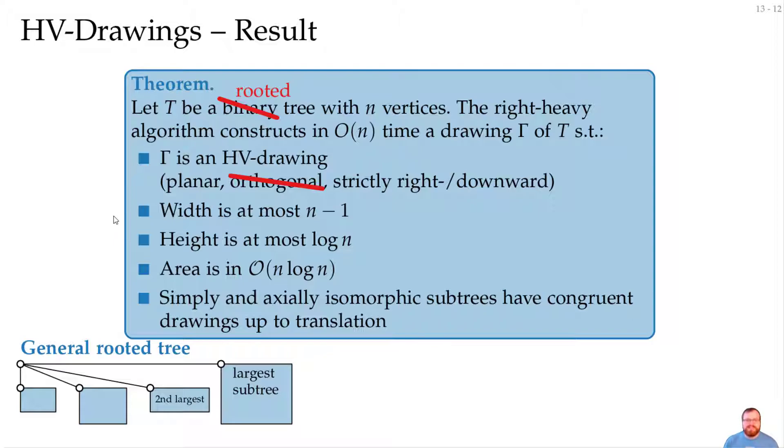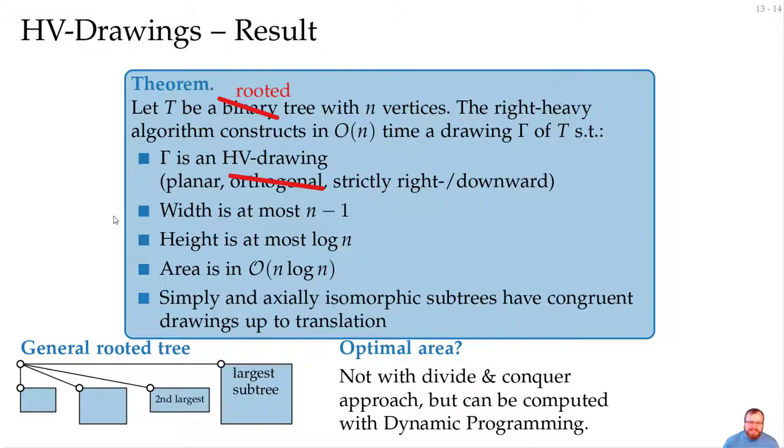Is the area we get from this algorithm optimal? No, not really, and we probably cannot do it with a divide and conquer approach, at least we don't know how, but with a dynamic program, we can compute the drawing with the minimum area. In the exercise sheet, I will give you an HV drawing algorithm that uses different rules, and there we will actually get order of n area. In the next part, we will have a look at radial layouts of trees.